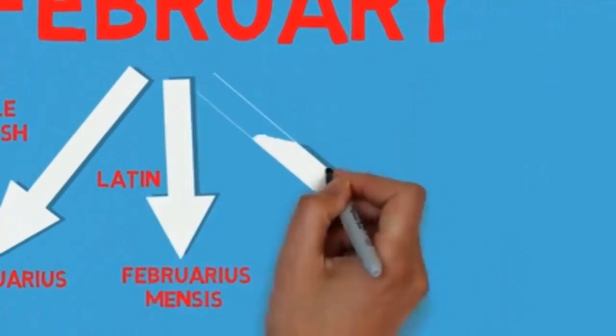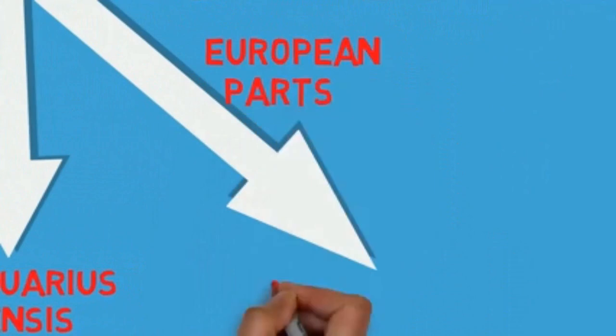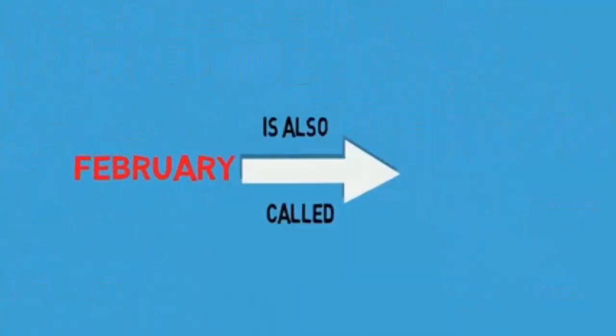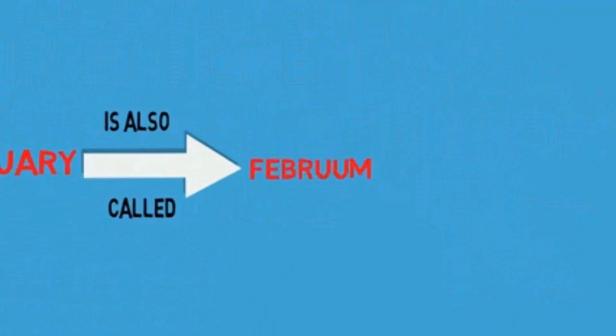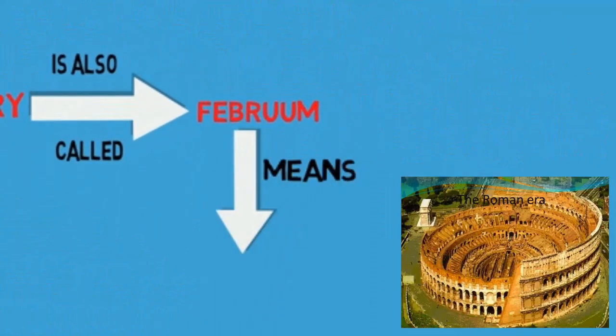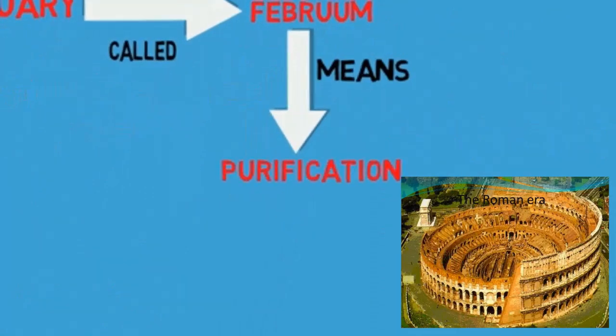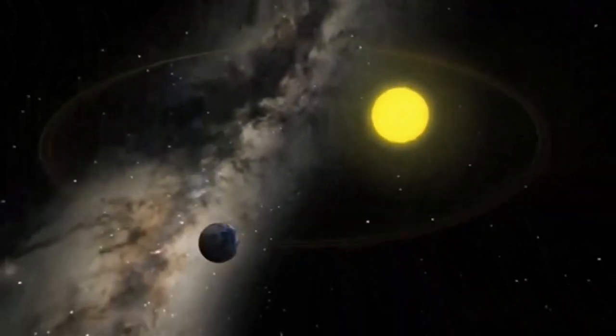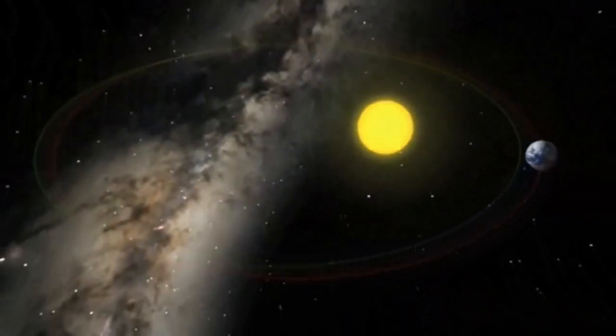Ang buwang ito ay mas kilala sa pangalan Februum ng mga sinaunang Romano na ibig sabihin paglilinis at kadalisayan. Sa kapanahunan ng mga emperyo ng Romano, ang buwan ng Pebrero ay ang pinakamaikli buwang buwan ng taon. Sa orihinal, ang Pebrero ay mayroon dating tatlong kong araw, ngunit tatlong beses lamang sa kasaysayan nagkaroon ng ikatlong puno ng Pebrero.